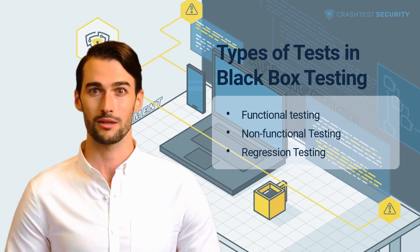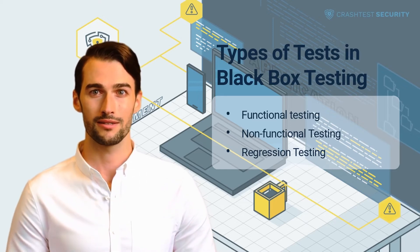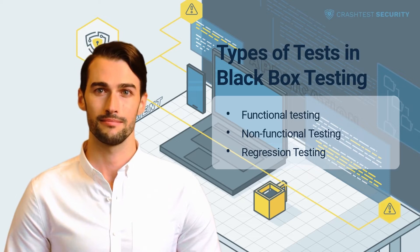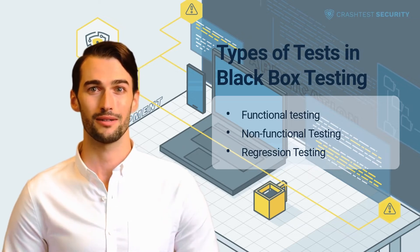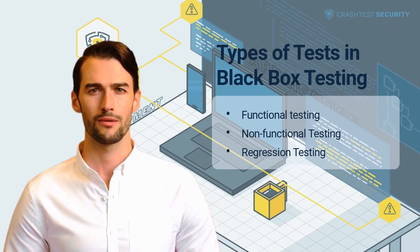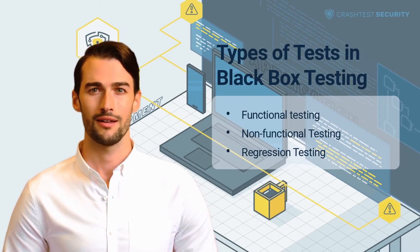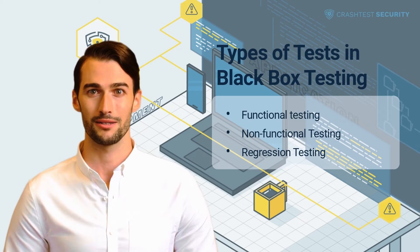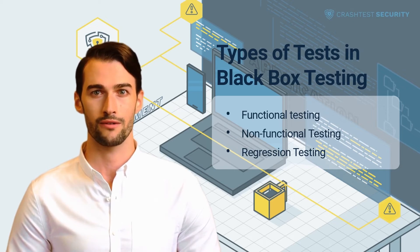Aspects covered by non-functional testing include: software performance testing, load testing, stress testing, volume testing, compliance testing, portability testing, configuration testing, and recovery testing. Regression testing is a black-box security testing method used to validate whether a recent update has affected the application's existing functionality. It involves re-executing test cases on existing features to ensure new changes do not incur unwanted side effects, and can be automated using tools that build test libraries out of varying combinations of previous test cases.